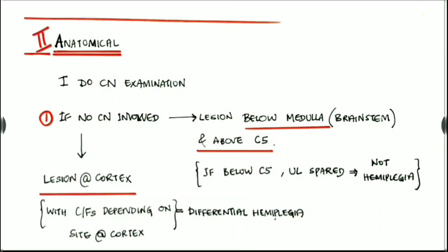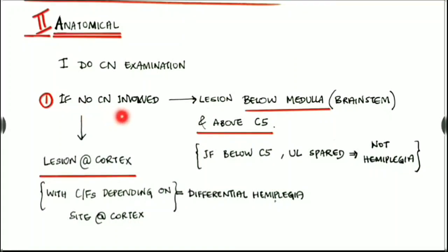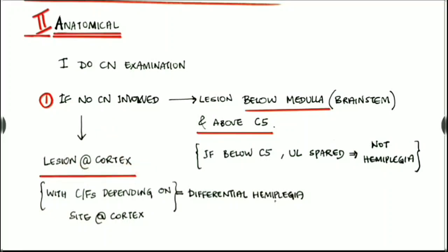The second thing we have to think about is the anatomical region. First, do the cranial nerve examination. If there is no cranial nerve involved, there are two possibilities: mainly the lesion is below the medulla, i.e., below the brainstem and above C5. If below C5, the upper limbs are spared and that won't be hemiplegia. If above the medulla or in the brainstem, any one cranial nerve will be involved. The second possibility is a lesion at the cortex, with cortical features depending on the site of the lesion.